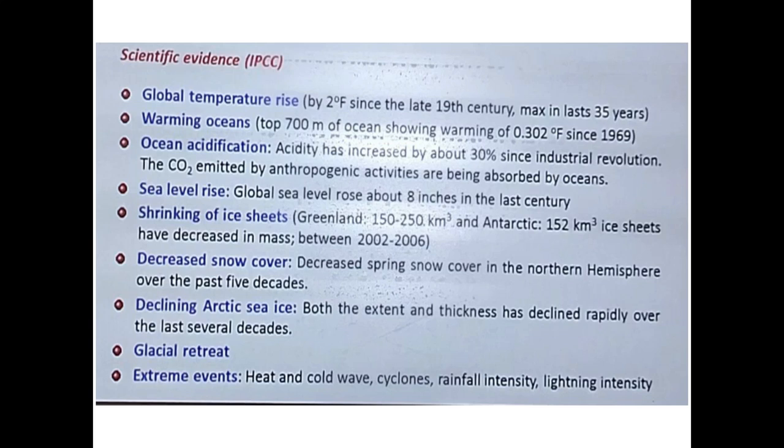Let's look at the scientific evidence of climate change, as given by the IPCC — the Intergovernmental Panel on Climate Change. The first evidence is global temperature rise: temperatures have risen by two degrees Fahrenheit since the late 19th century, with maximum warming in the last 35 years. The second evidence is warming of oceans — the top 700 meters of ocean have shown warming of 0.302 degrees Fahrenheit since 1969.